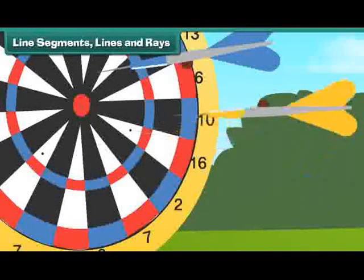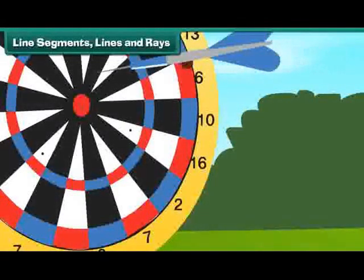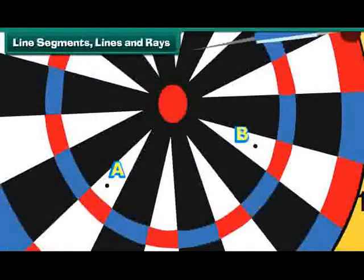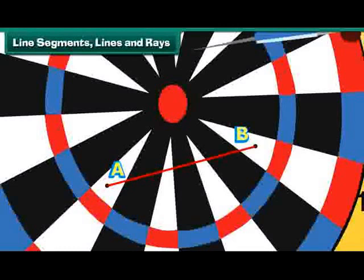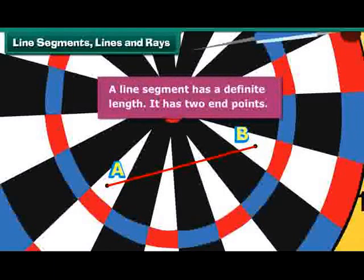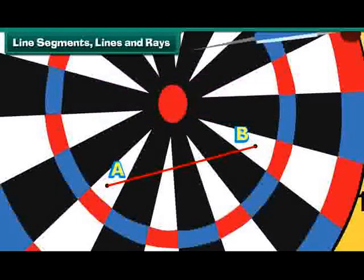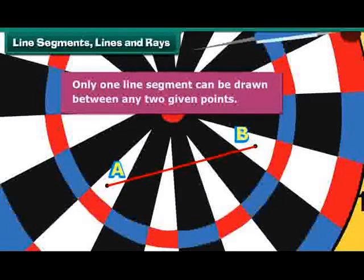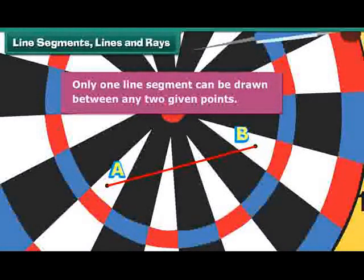Let us remove another dart to reveal another point. We name the two points A and B. We now join the two points. We get the line segment AB. A line segment has a definite length. It has two end points. Can we draw another line segment between two points A and B? No! Only one line segment can be drawn between any two given points.